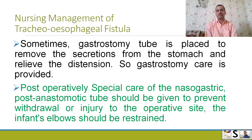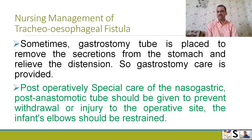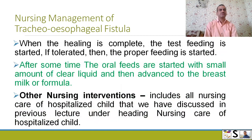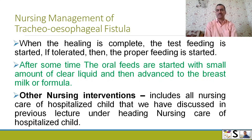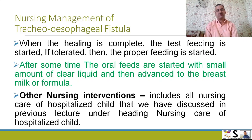Postoperatively, special care of the nasogastric post-anastomotic tube should be given to prevent withdrawal or injury to the operative site. The infant's elbows should be restrained so that the tube cannot be pulled accidentally by the child. When healing is complete, test feeding is started, and if tolerated, proper feeding is given. Oral feeds are started with small amounts of clear fluid and then advanced to breast milk or formula. Other nursing interventions include all nursing care of the hospitalized child as discussed in the previous lecture — you can watch that video from my channel or click the 'i' button.